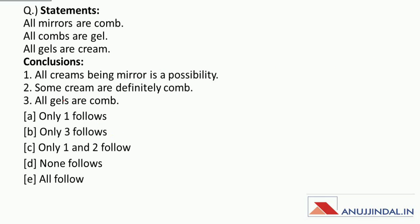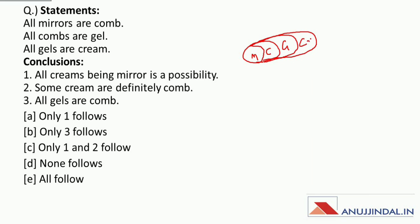Next question: All mirrors are comps, all comps are gels, and all gels are cream. Let us draw the Venn diagram. All gels are cream, all comps are gels, and all mirrors are comps. Now conclusion number one is: all creams being mirror is a possibility.